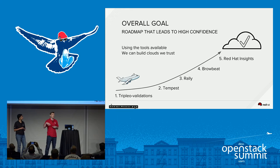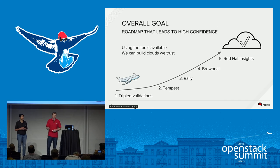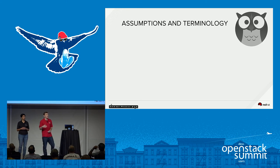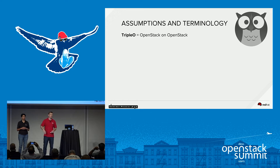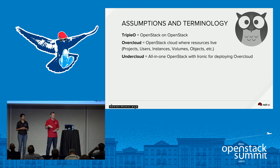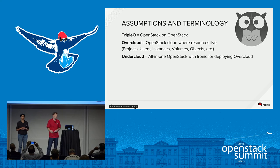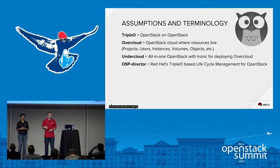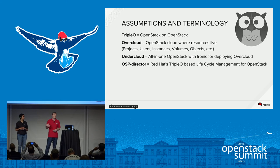As Ruchika said, if we can utilize this tool set at the right times, in the right place, and in the right ways, we can build high confidence in our cloud deployments. We do need to cover some assumptions and terminology. The first is TripleO — at Red Hat, we use TripleO to deploy OpenStack. It's OpenStack on OpenStack, and sometimes that's a confusing concept, but we believe it's a great way to do lifecycle management. What TripleO deploys is called our overcloud, where all user resources like instances and volumes live. Then we have the undercloud, an all-in-one OpenStack deployment that utilizes Ironic to bare-metal provision servers, and Heat and Puppet to deploy and configure them. You might also hear us refer to OSP Director, which is synonymous with TripleO upstream, and RDO Manager midstream.